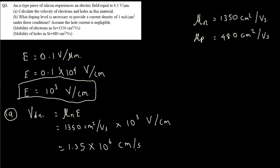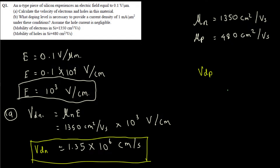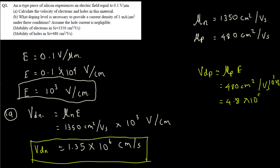Now for the drift velocity of holes, vdp, we use μp times E. μp is 480 cm²/V·s, multiplied by E = 10³ V/cm. We can write 480 as 4.8 × 10², then multiplied by 10³ gives a total of 4.8 × 10⁵ centimeters per second. This is vdp.